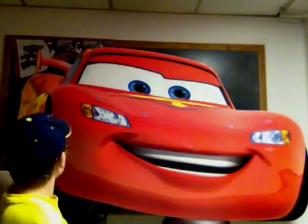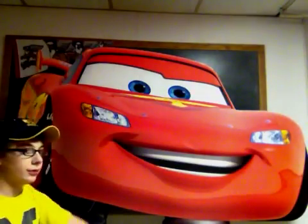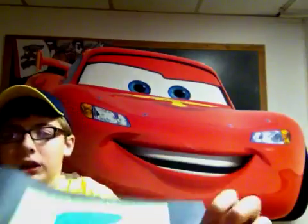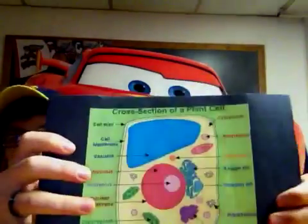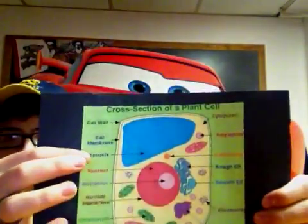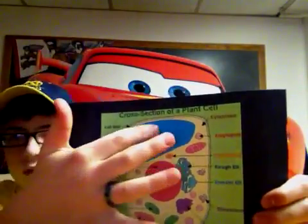Next is the vacuole. The vacuole is the gas tank in the car, that's what it would be compared to, because it stores the cell's food. And the vacuole on this place around the cell would be right here, which is this big storage area.